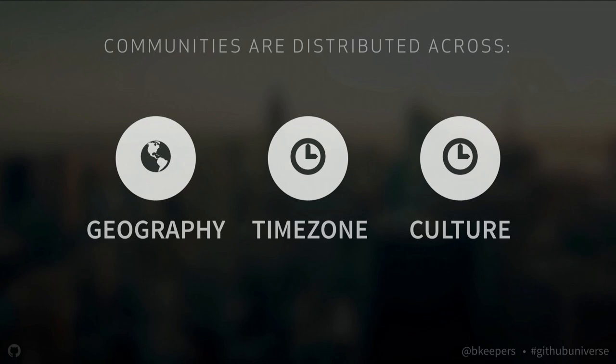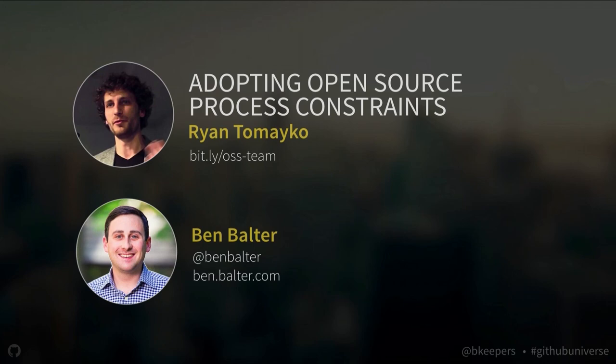If we look at how open source communities communicate, we first have to look at the constraints they have. Open source communities are distributed geographically, across time zones and cultures. This means they don't have the benefit of high-fidelity communication — you can't walk over and tap somebody on the shoulder, you can't jump into a meeting, you can't even stand around the water cooler.